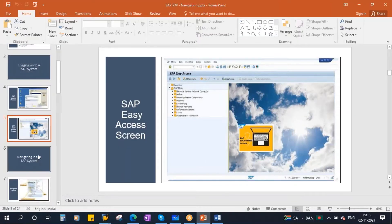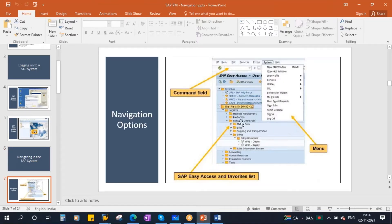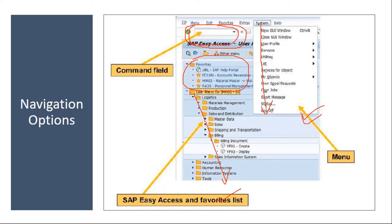Now we will talk about navigating in the SAP system. To navigate, we have three options. One is using the standard menu path to perform a transaction or function. Another is using the favorites list. Or you can enter the transaction code directly in the command field. You can also use the system menus at the top — Menu, Edit, Favorites, Extras, System, Help.